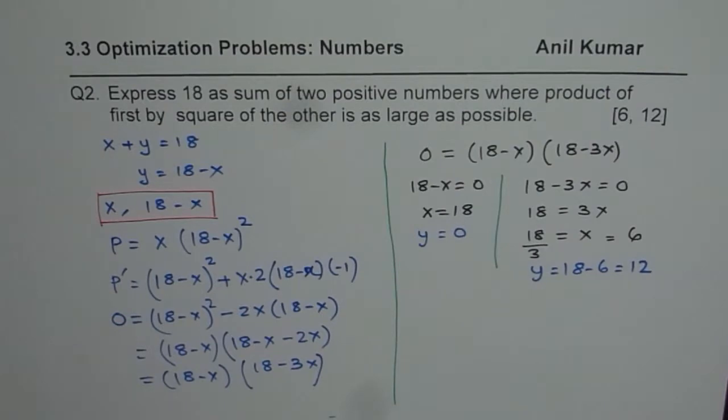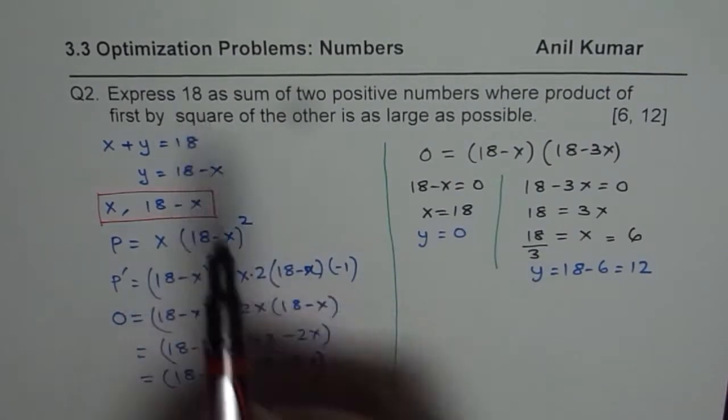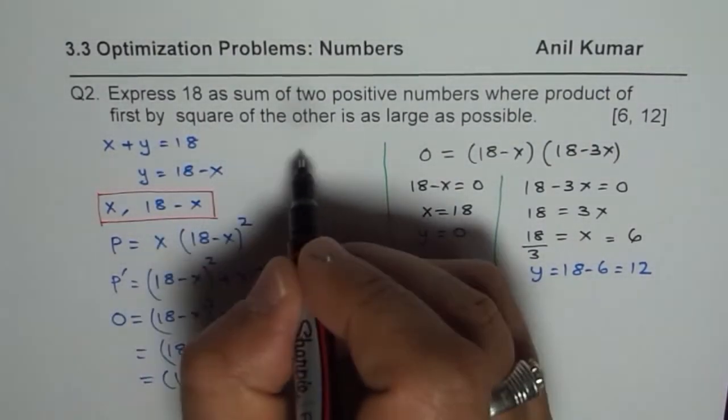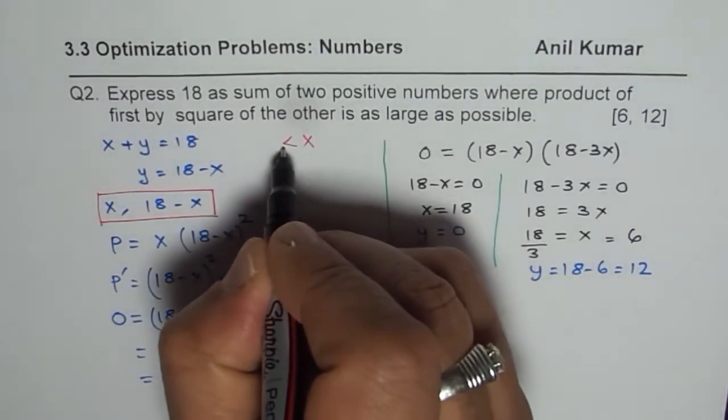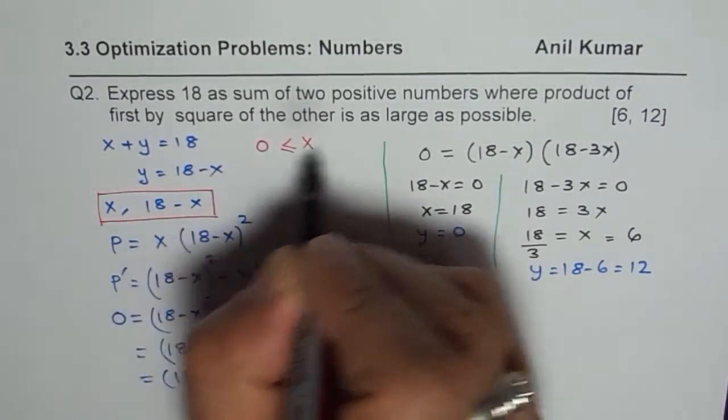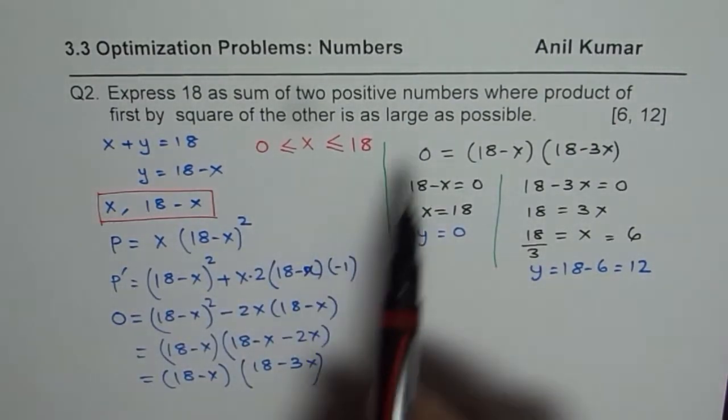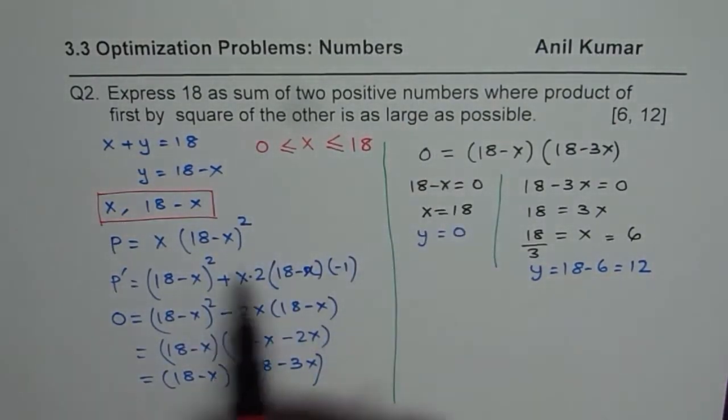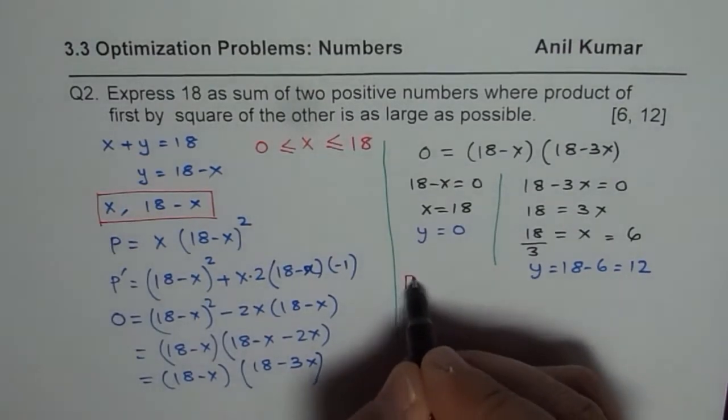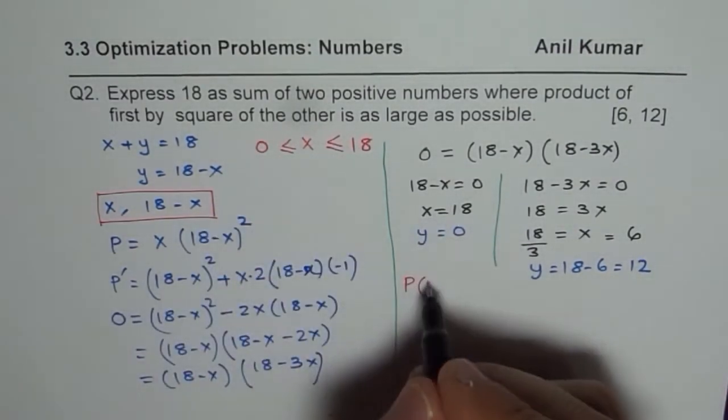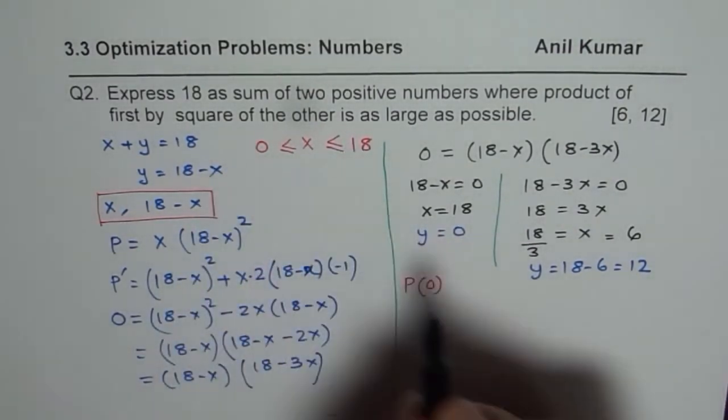Whenever we are talking about sum as 18 we also know that the number x has limits. It could be minimum 0 and maximum 18. Now to find the largest number we need to find the value of product at all these points.